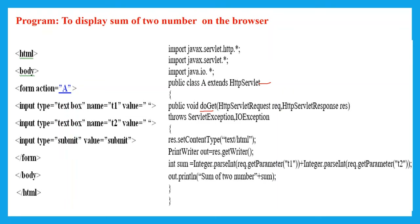There are two input text fields: the names are T1 and T2, to read the values — assume 10 and 20 respectively. When the client submits the button, the values 10 and 20 are passed from the HTML to the servlet using a form tag. The form tag contains an action specifying the class name A. Since no method is specified, the default method in a form tag is Get.